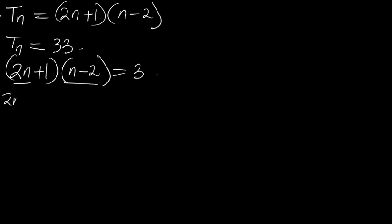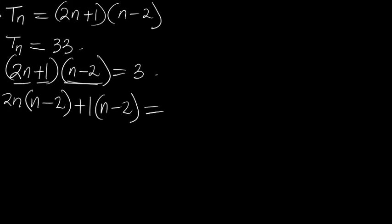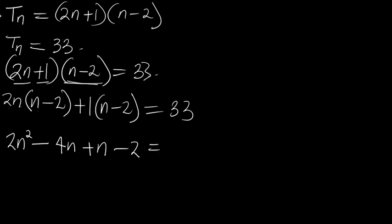Use 2n to multiply the whole of (n - 2), then use +1 to multiply the whole of (n - 2), equal to 33. Opening the brackets: 2n times n gives 2n², 2n times −2 gives −4n, plus 1 times n gives +n, plus 1 times −2 gives −2, equal to 33.